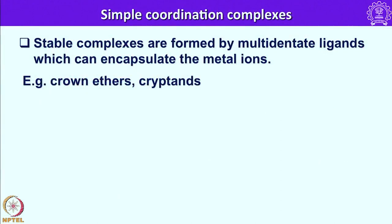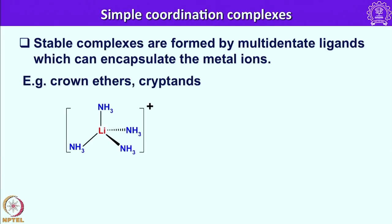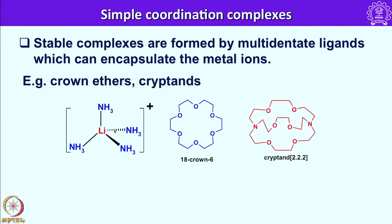That means stable complexes are formed by multidentate ligands which can encapsulate the metal ion. In order to stabilize a cation coming from alkali metals, one has to use a multidentate ligand which can encapsulate the metal ion. In this context we have two types of ligands that are very important in stabilizing alkali metal cations — they are called crown ethers and cryptands. As I said, lithium prefers 4-coordination; you can see here a tetramine lithium compound.